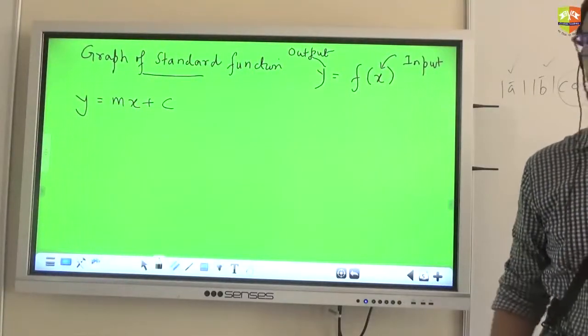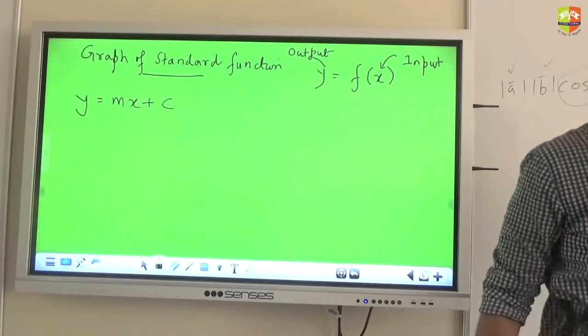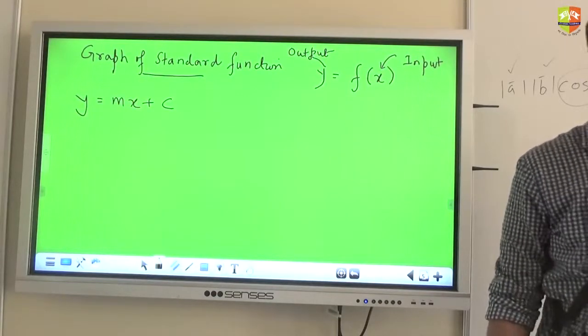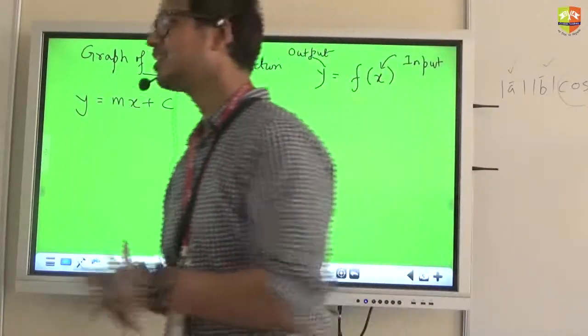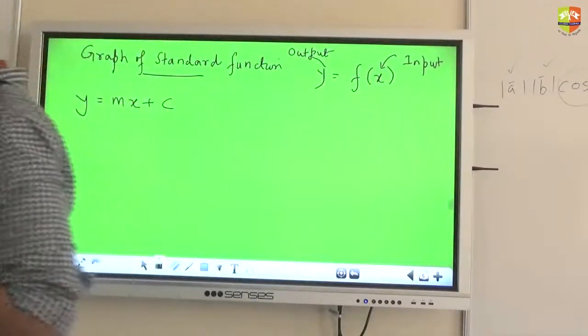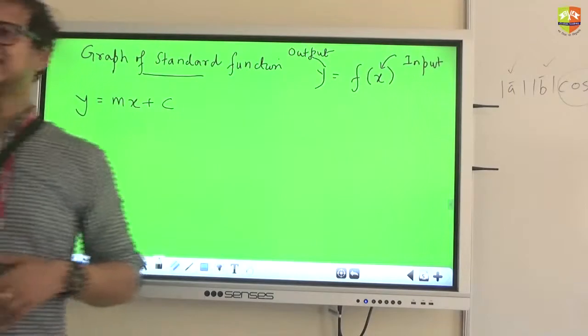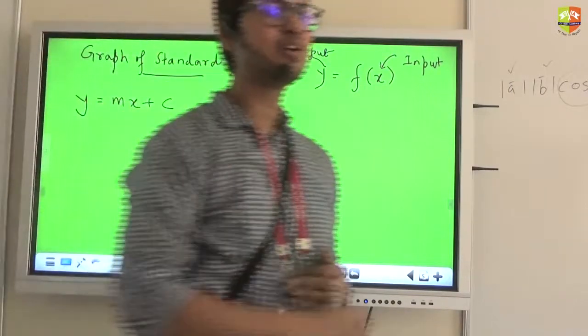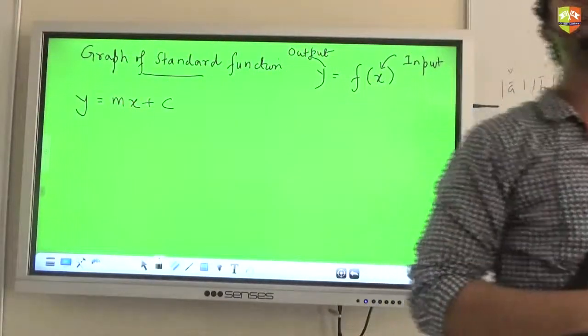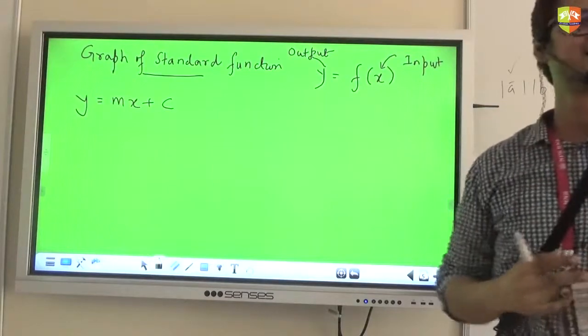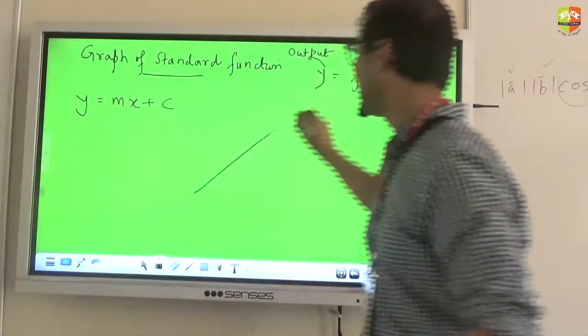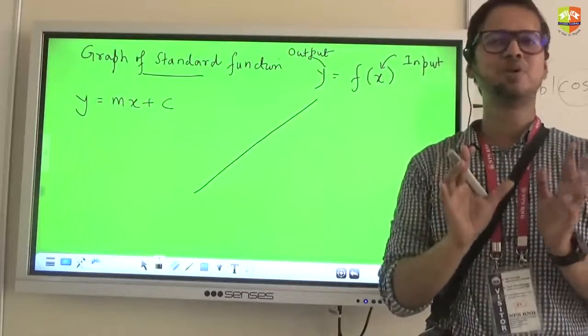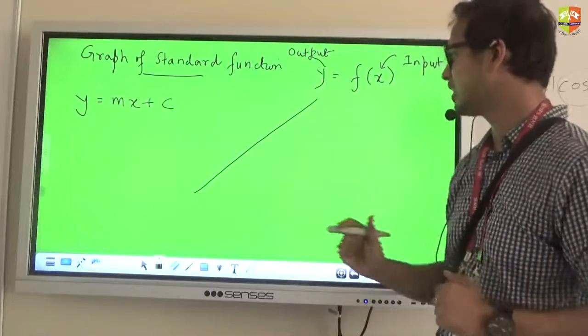Who doesn't know this? Everybody knows? What is m here? Slope. What does slope represent? The gradient of that line. How steep is the line? Right? Can slope be a negative quantity also? When is it a negative quantity? Okay. Just to avoid this confusion, because many of you are talking simultaneously.